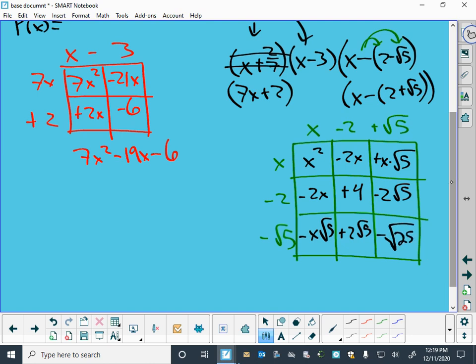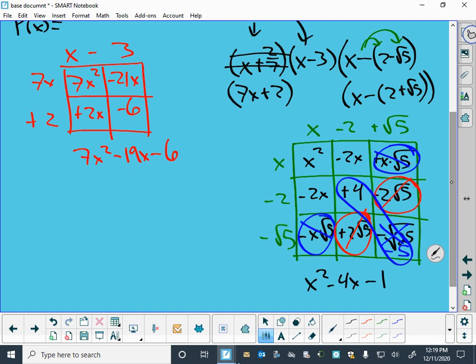So, well, this minus x root of 5 and plus x root of 5, those are going to cancel each other out. Those add up to 0. My plus 2 root 5 and my minus 2 root 5 also add up to 0, and the square root of 25 is 5, so this thing with the negative in front is actually a negative 5. So, I'm going to be able to combine that with this one here. Those are both just constants. So, I've got an x squared minus 2x minus 2x is minus 4x, and 4 minus 5 is negative 1. So, when I multiply the two irrational roots together, I get x squared minus 4x minus 1.